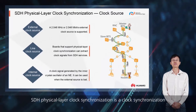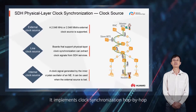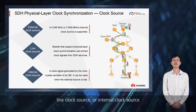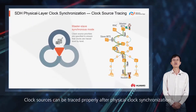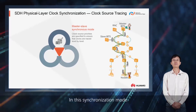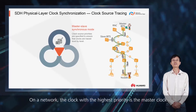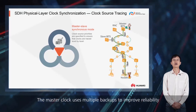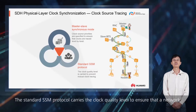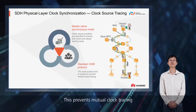SDH physical layer clock synchronization is a clock synchronization technology applicable to the SDH network. It implements device clock synchronization hop by hop. Devices can extract clock signals from an external clock source, line clock source, or internal clock source. Clock sources can be traced properly after physical clock synchronization is implemented in master-slave synchronization mode. In this mode, clock source priorities are specified to ensure that clocks are traced level by level. On a network, the clock with the highest priority is the master clock, and the master clock uses multiple backups to improve reliability. The standard SSM protocol carries the clock quality level to ensure that a network device automatically selects the clock source with the highest quality and priority, preventing mutual clock tracing.